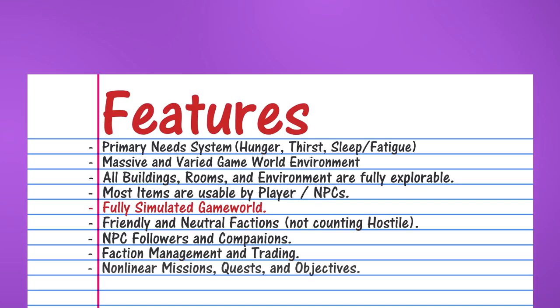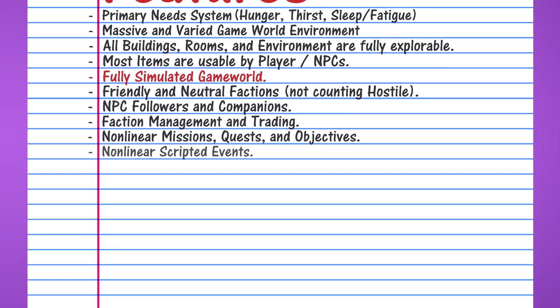Next point: 'Non-Linear Missions, Quests, and Objectives.' Basically, I don't want linear progression where you must go here and then the story advances. I want to put out an objective — whether for a mission, quest, or side quest — and have the player choose how they wish to tackle the situation. Next: 'Non-Linear Scripted Events.' I want a whole bunch of scripted events — random things that just happen in the world that can change the environment or change NPC and mob behaviors. I want scripted events to happen with or without the player.